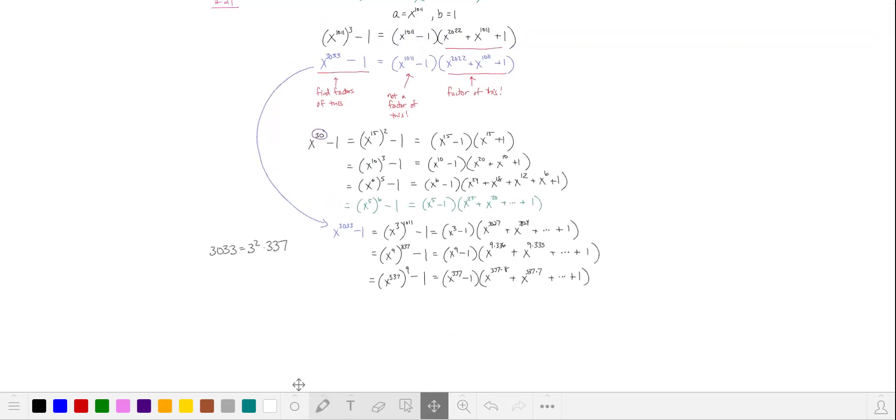We have many choices for which factors we can use, so we'll remind ourselves that it can't be a factor of x to the 1011 minus 1. To determine what those factors are, we can find the prime factorization of 1011.